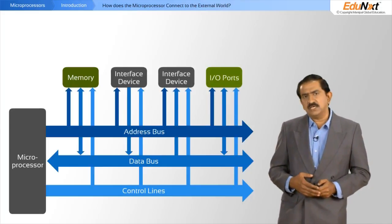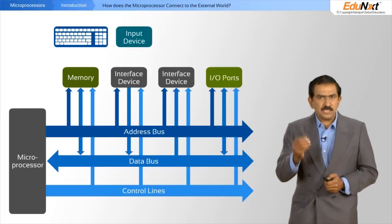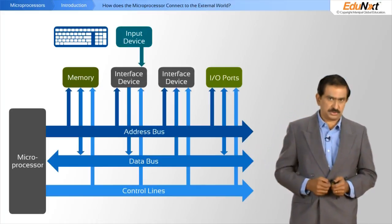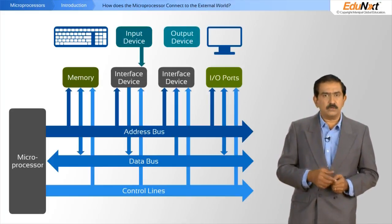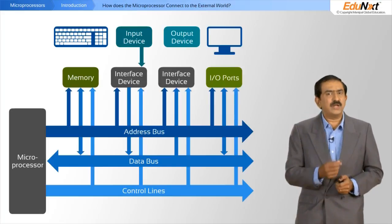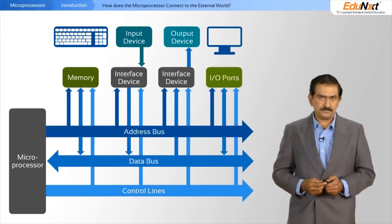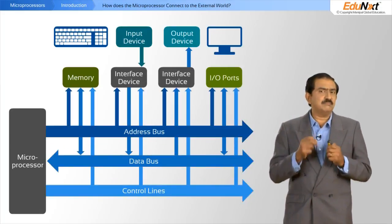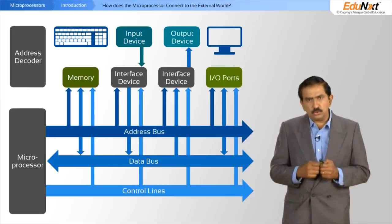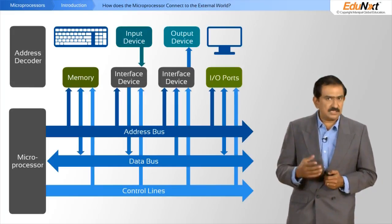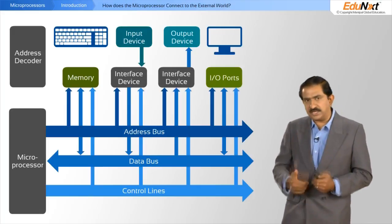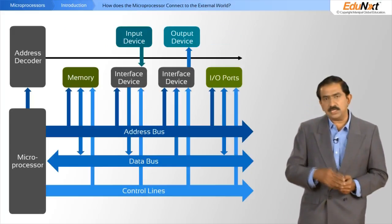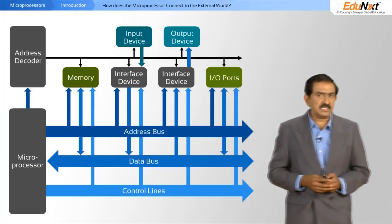If you take an interface device — let us take an input device like a keyboard — you would see from this diagram that the data bus flows into the processor. On the other hand, if you had an output device like a monitor or an LCD or LED display, you would have the data bus come out of the processor into that output device. This is not enough on its own — you also need something called an address decoder. The address decoder takes address lines, read signals, and write signals from the processor, decodes them accordingly, and triggers the various peripheral devices connected to it.